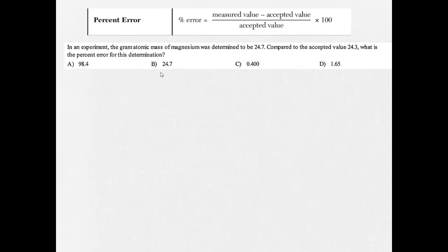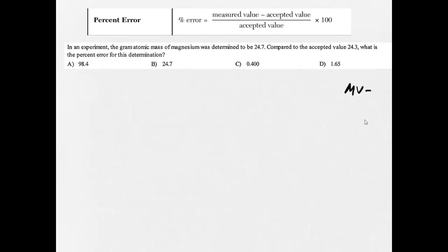All right, question time. In an experiment, the gram atomic mass of magnesium was determined to be 24.7. Compared to the accepted value, 24.3, what is percent error for this determination? So you need to write out the formula, measured value equals, sorry about that, write out the formula, measured value equals, accepted value equals, percent error equals, figure out what's what, plug it into the formula, and get your answer. And we'll see who can get it right.